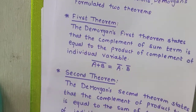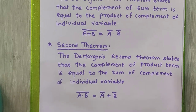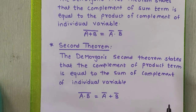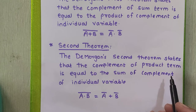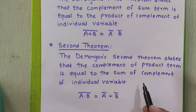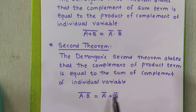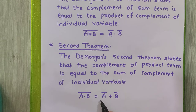De Morgan's second theorem states that the complement of the product term is equal to the sum of complements of individual variables. It is represented by the expression: A into B, the whole complement, is equal to A complement plus B complement.